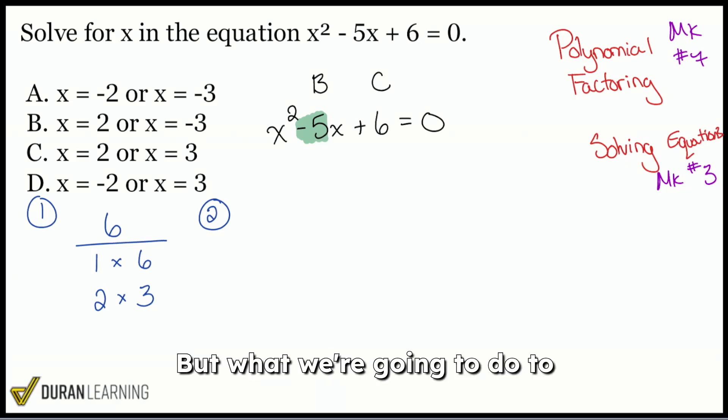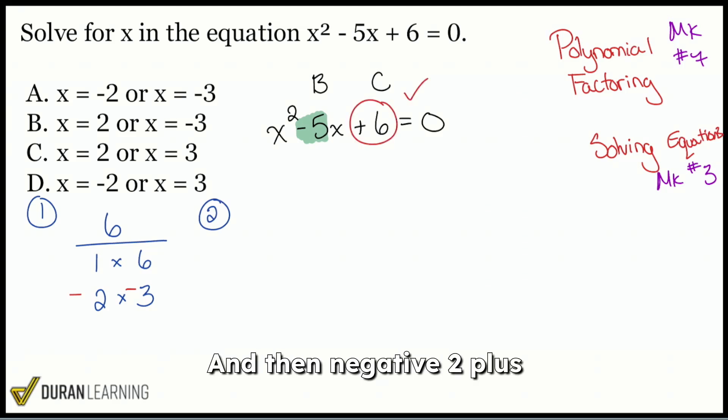But what we're going to do to get this done is remembering, hey, what if these were both negative? What if the 2 and the 3 were both negative, negative times a negative, that's still going to be a positive. And then negative 2 plus negative 3 does indeed give us negative 5. So this actually works. Yes, absolutely.